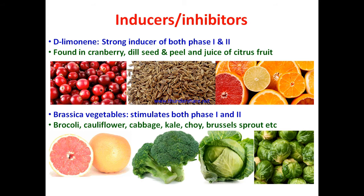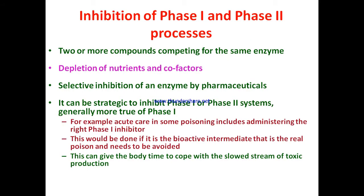Brassica vegetables stimulate both phase one and phase two. Vegetables like broccoli, cauliflower, cabbage, kale, bok choy, and Brussels sprouts induce both phase one and phase two biotransformation.